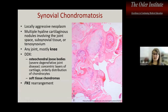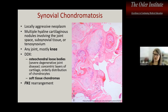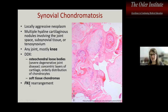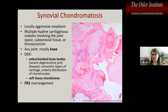Synovial chondromatosis is multiple lobules of hyaline cartilage in joints. The differential includes osteochondral loose bodies. Synovial chondromatosis is now known to have FN1 gene rearrangements — an emerging entity of FN1-related neoplasia.